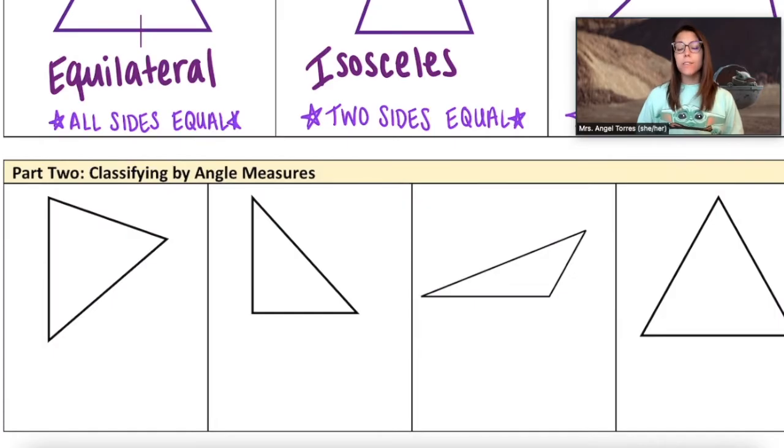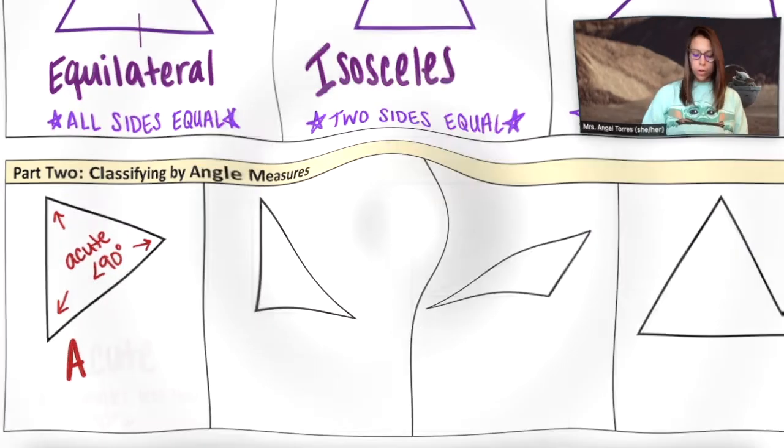Triangles can also be classified by their angle measures. In our first triangle all three of these angles are less than 90 degrees and we call those acute angles when they are less than 90 degrees. So if a triangle has three acute angles we call that an acute triangle.